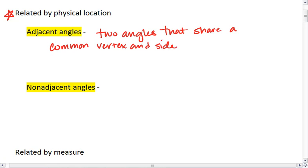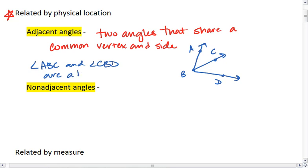that share a common vertex and side. For example, if I drew angle ABC, then I want to share a vertex B, and draw another side here, such that angle ABC and angle CBD are adjacent angles.